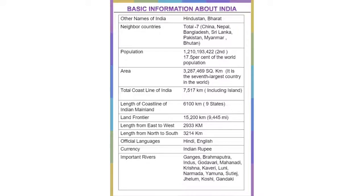Neighbouring countries are total 7, namely China, Nepal, Bangladesh, Sri Lanka, Pakistan, Myanmar, and Bhutan. The population of India is about 1.2 billion. It is the second most populous country in the world. It has 17.5% of the world's population.